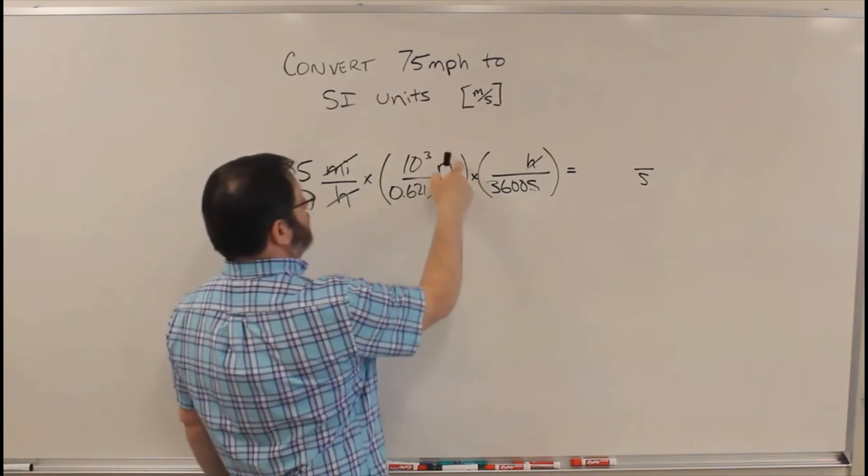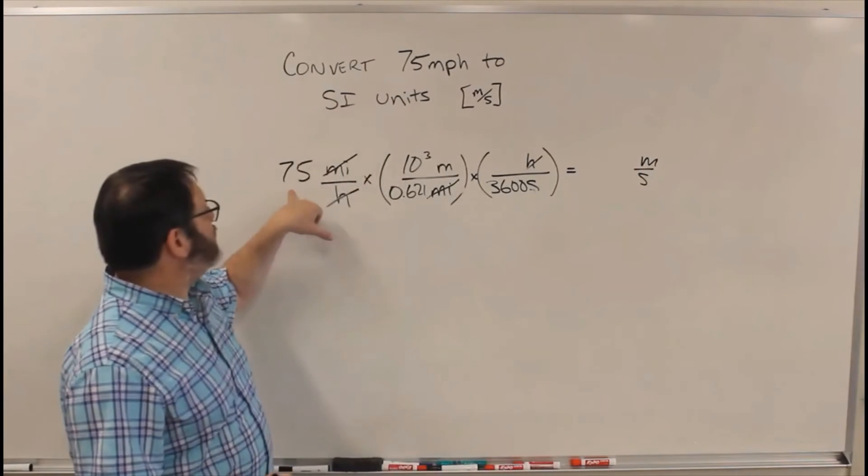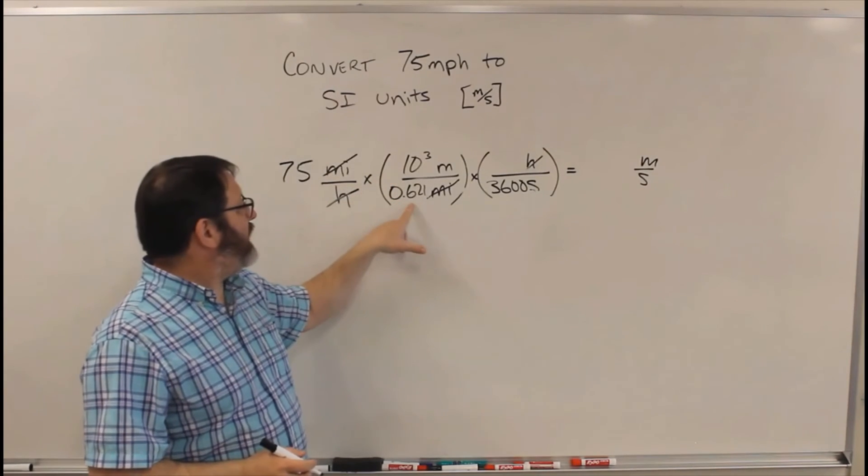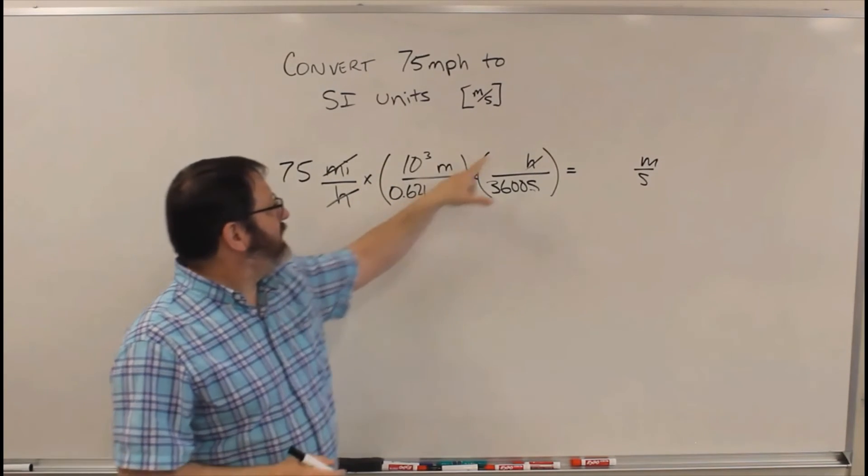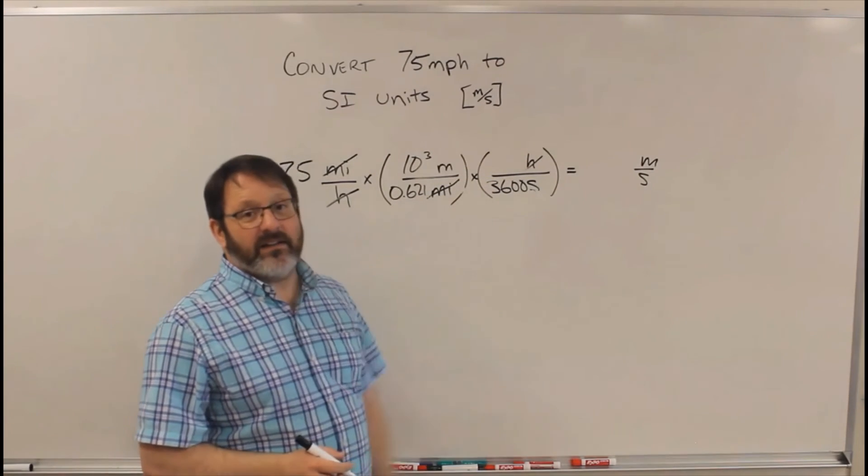Now I'm left with meters per second. And all I have to do now is take my 75, multiply it by 10 to the third, that's 1,000, divide it by 0.621, and then divide by 3,600, and I'll get the answer.